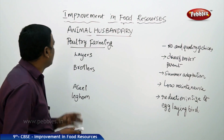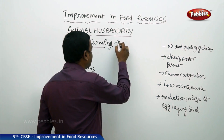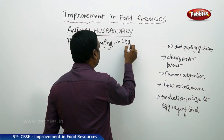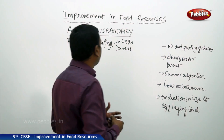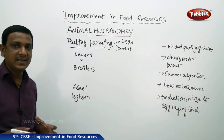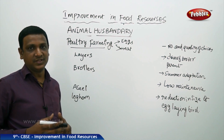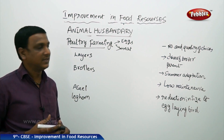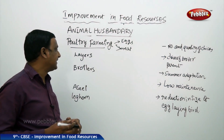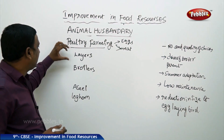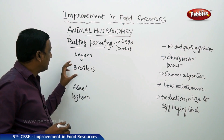Now let us see poultry farming. Poultry farming is done for eggs and meat. These two are the highly consumed non-vegetarian food resources, or animal food resources, along with milk. The eggs and meat are produced from the poultry industry. Here, hens are of two types: layers and broilers.